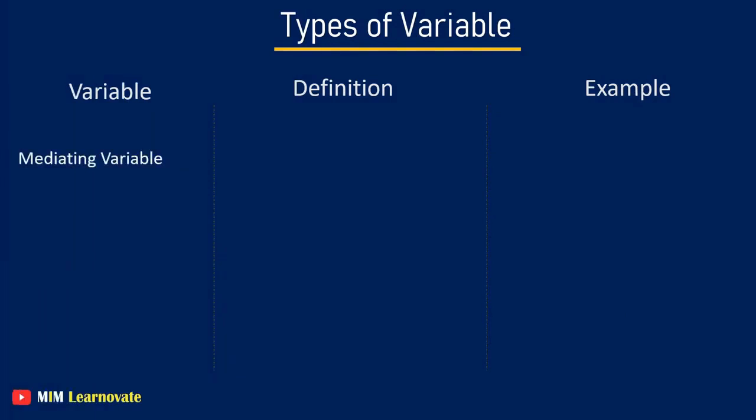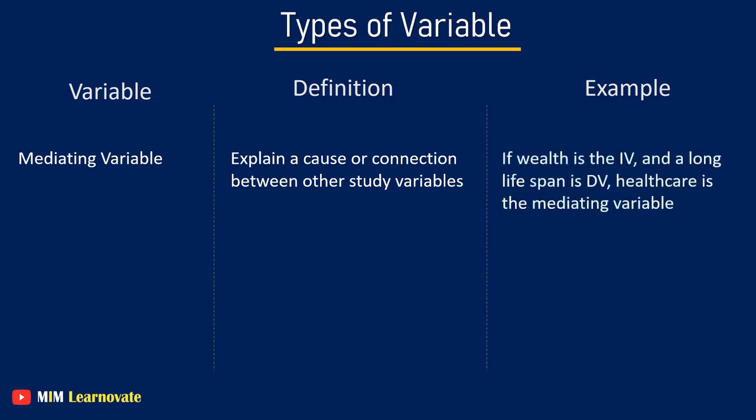Mediating variable. A mediating variable, sometimes called an intervening variable, is a theoretical variable that researcher uses to explain a cause or connection between other study variables, usually dependent and independent ones. They are associations instead of observations. For example, if wealth is the independent variable and long lifespan is a dependent variable, the researcher might hypothesize that access to quality healthcare is the mediating variable that links wealth and lifespan.